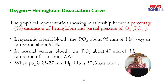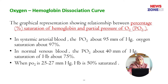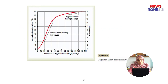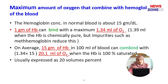Now, the oxyhemoglobin dissociation curve. It is a graphical representation showing the relationship between the percentage saturation of hemoglobin and the partial pressure of oxygen. In systemic arterial blood, the partial pressure of oxygen is above 95 mmHg. In normal venous blood, partial pressure of oxygen is 40 mmHg and hemoglobin saturation is about 75%. When the partial pressure of oxygen is 25–27 mmHg, hemoglobin is 50% saturated. Hemoglobin concentration in normal arterial blood is 15 g/dL; 1 gram of hemoglobin can bind with 1.34 mL of oxygen, so 15 g of hemoglobin can bind with 20 mL of oxygen when 100% saturated, expressed as 20 volume percent.